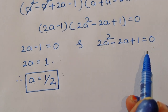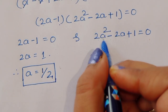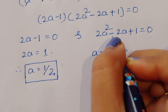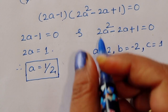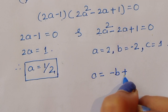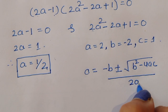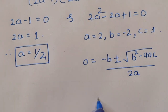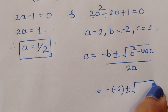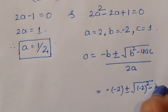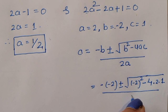For the next equation, 2a² minus 2a plus 1 equals 0, we use the quadratic formula. Here the coefficient of a² is A = 2, B = minus 2, and C = 1. So a equals minus B plus or minus square root of B² minus 4AC, all over 2A. Substituting: minus(minus 2) plus or minus square root of (minus 2)² minus 4 times 2 times 1, over 2 times 2.